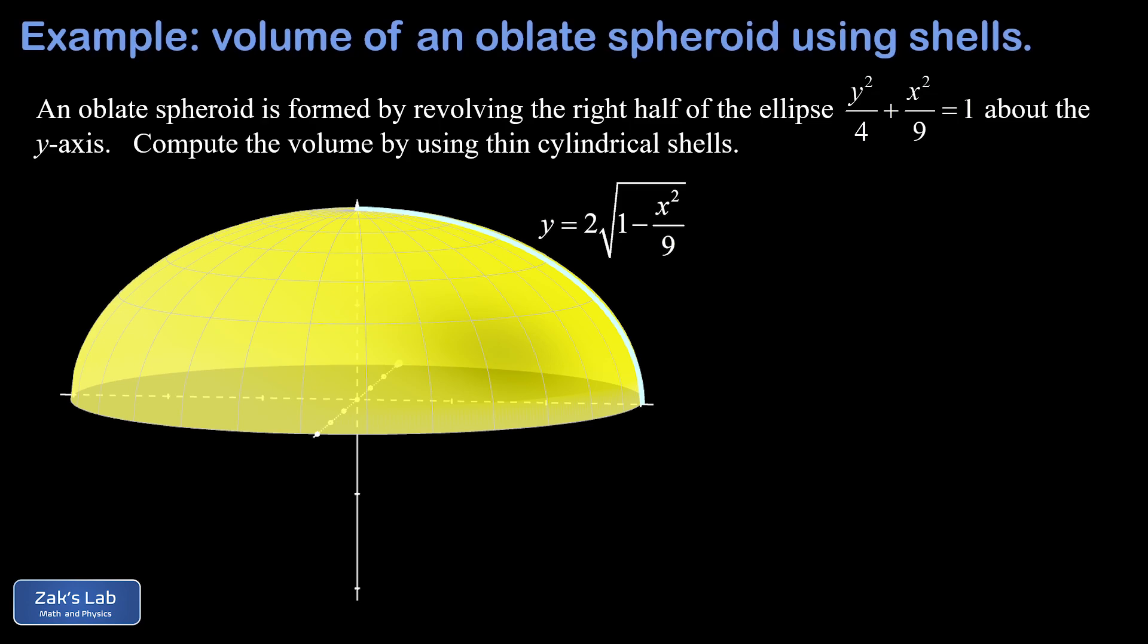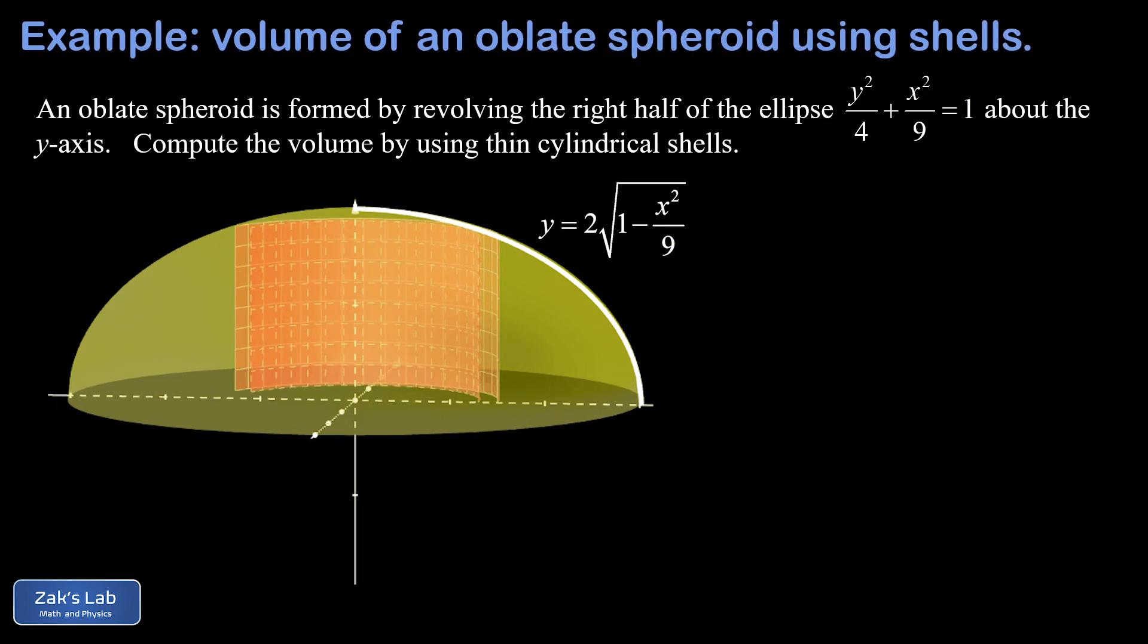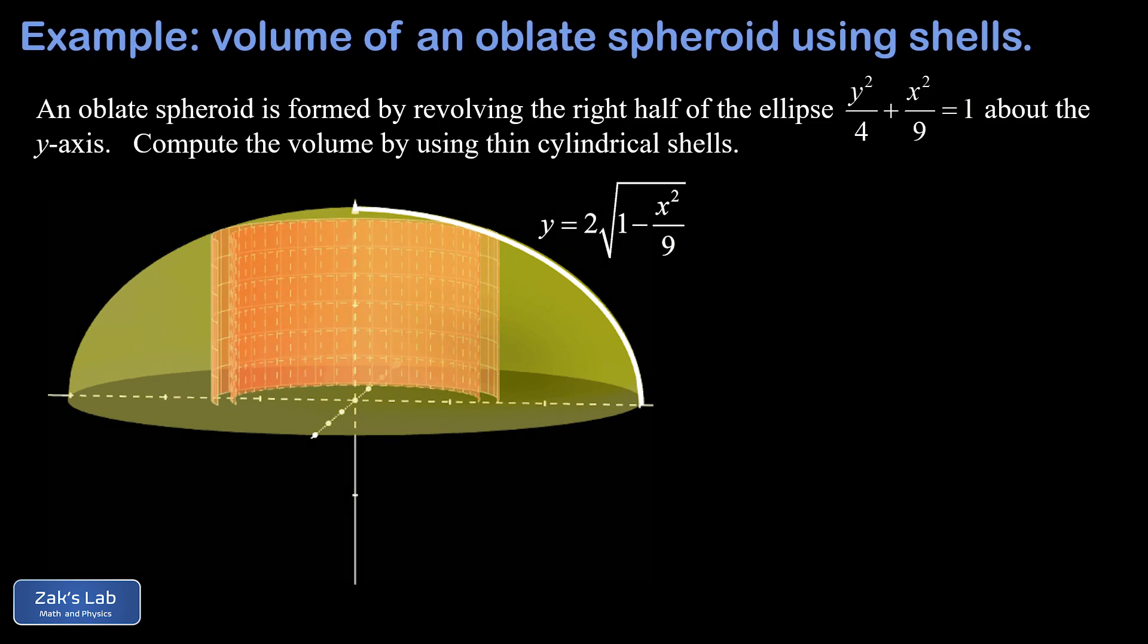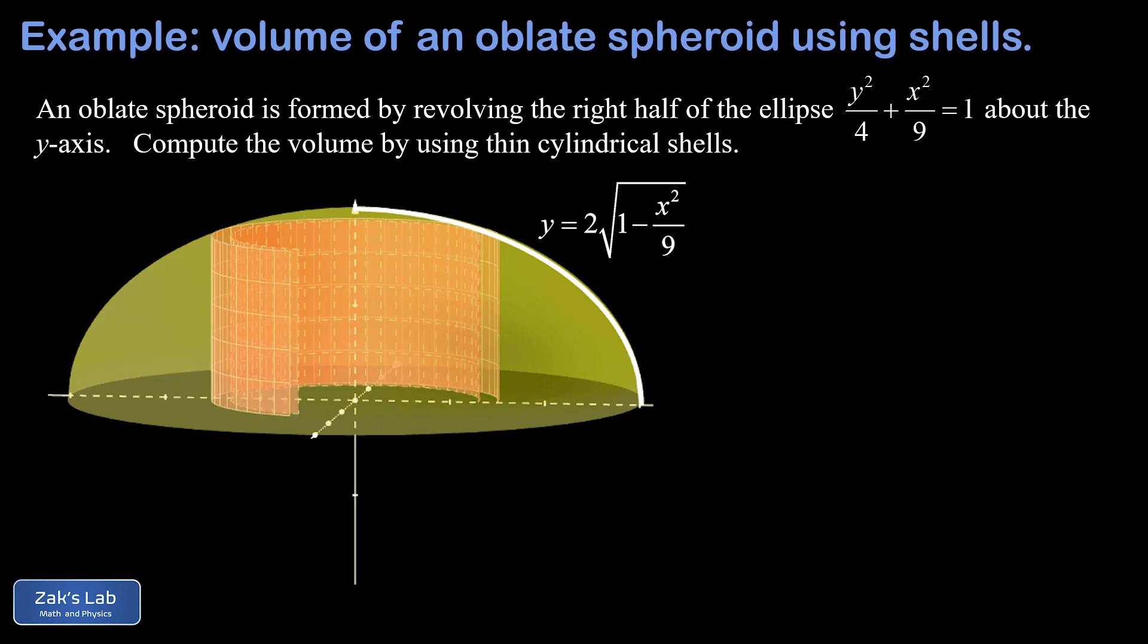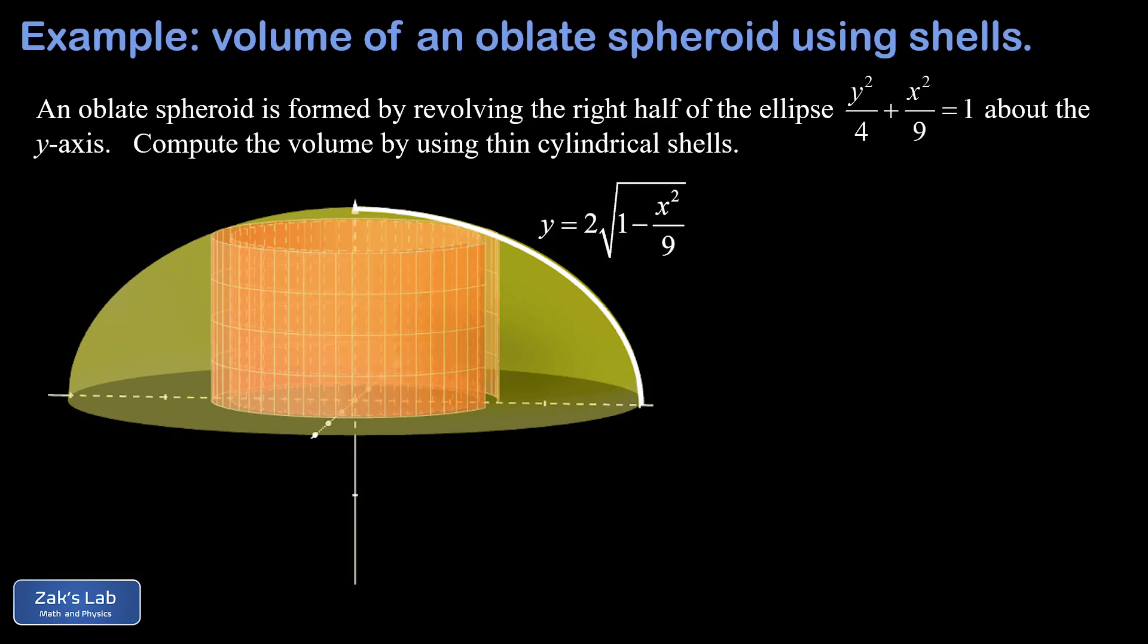This produces just the upper half of the spheroid. Next we're going to propose that we fill this volume with nested thin cylindrical shells. We visualize just one of these shells wrapping around the y-axis, and that's going to give us an incremental contribution to the total volume contained within the upper half of the spheroid.